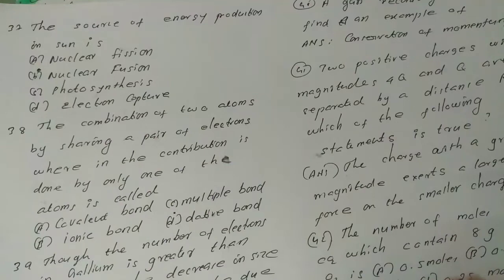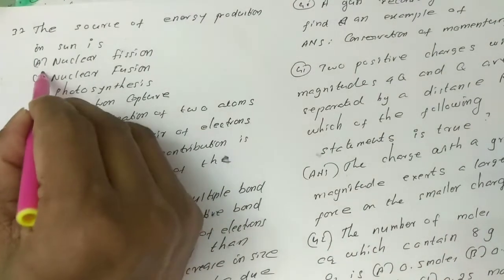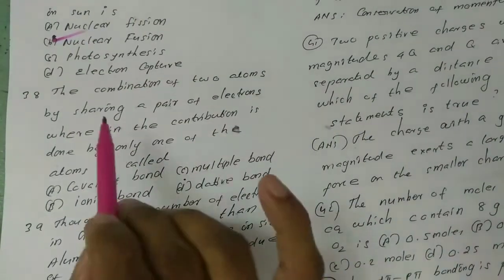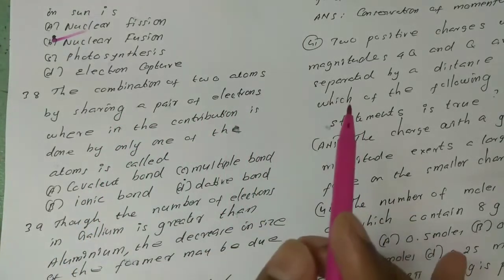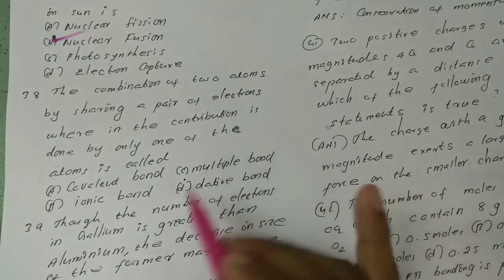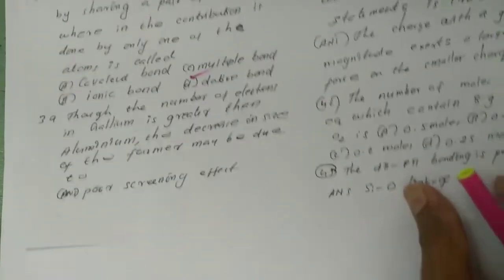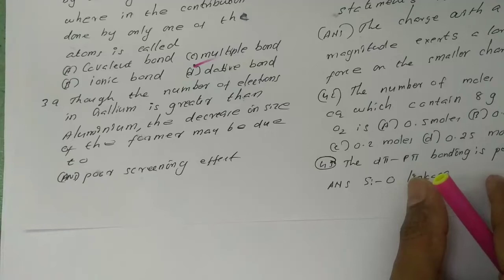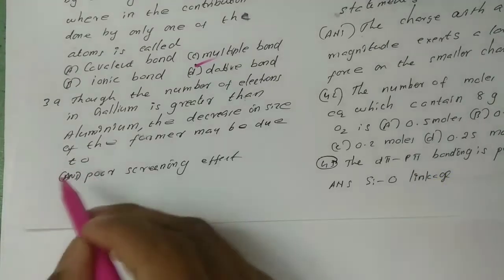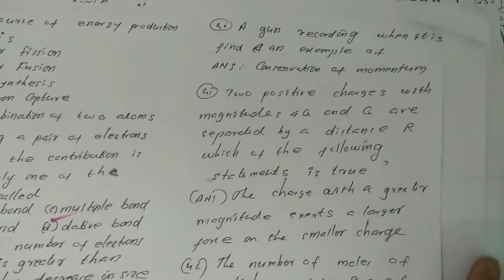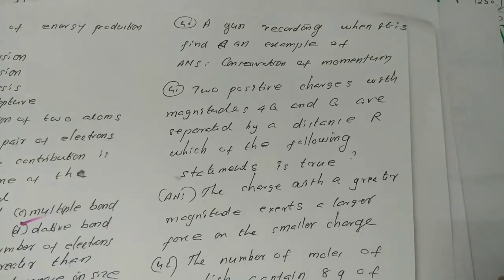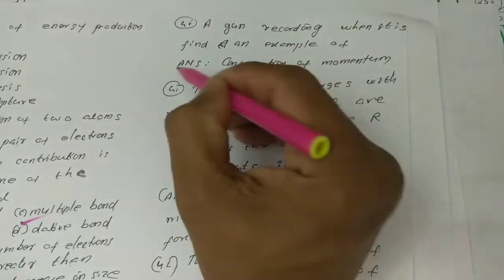The source of energy production in the sun. The combination of two atoms by sharing a pair of electrons, where the contribution is done by only one of the atoms, is called a dative bond. The number of electrons in gallium is greater than aluminium, and the decrease in size of the former may be due to poor screening effect. The gun recoiling when fired is an example of conservation of momentum.